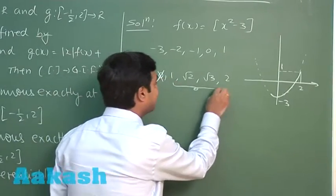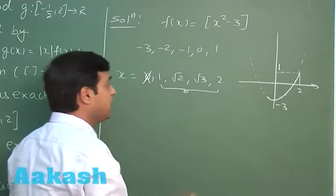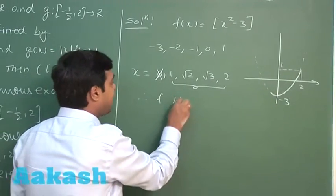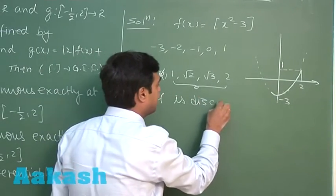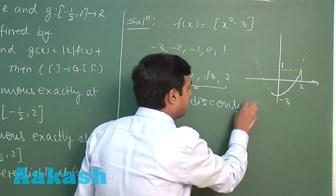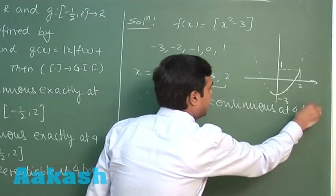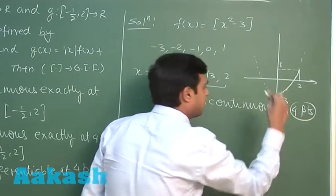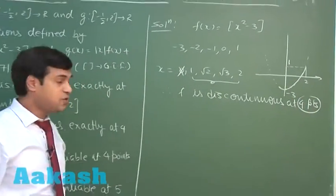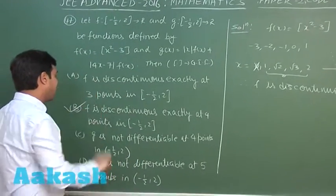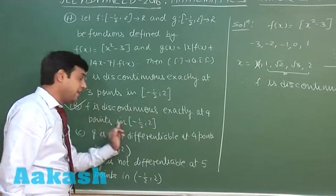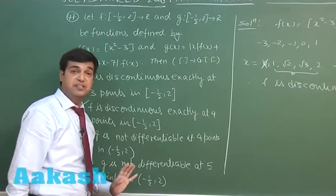But for the rest of the four points, clearly it will have a jump. So we can say f is discontinuous at four points. So from the first two options, we can see that B is correct. f is discontinuous exactly at four points in the given interval.